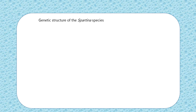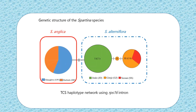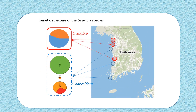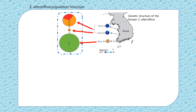Our investigation of the genetic structure of the two Spartina species invading Korea revealed that all Spartina angelica constitutes only one haplotype, while Spartina alterniflora is divided into three haplotypes. Therefore, all Spartina angelica populations found at all locations share one haplotype, while Spartina alterniflora populations are divided into three haplotypes. Due to the genetic diversity found in S. alterniflora, we further investigated the Spartina alterniflora population in more detail, and found that the three haplotypes were segregated based on geographical locations. Haplotype 3 was found at locations 1 and 2, haplotype 2 was only found at location 2, while all individuals at location 1 were composed of one haplotype.